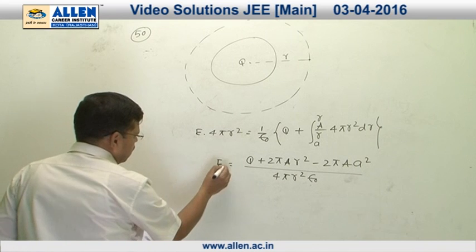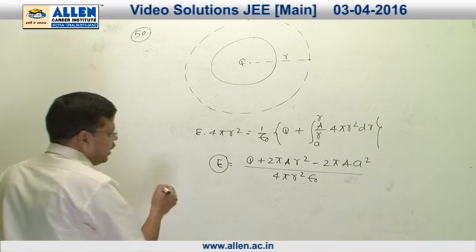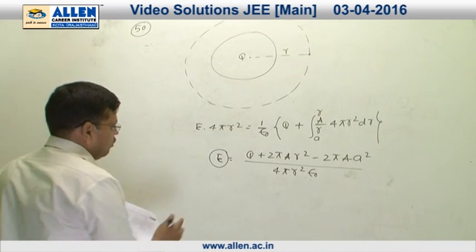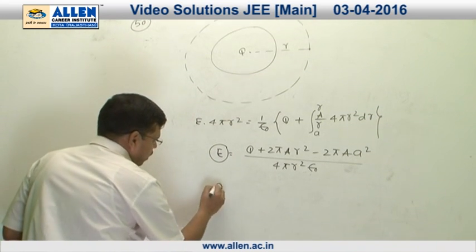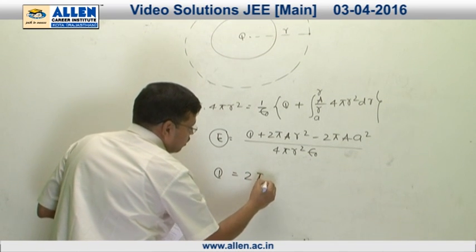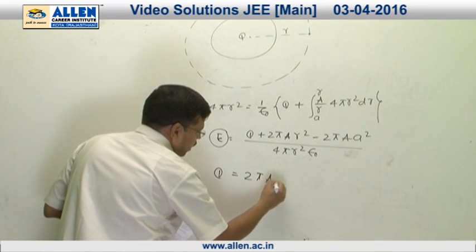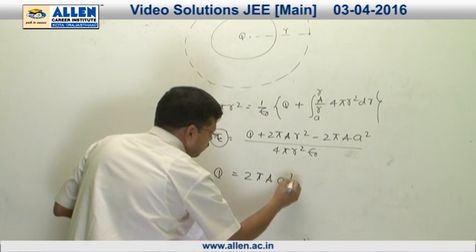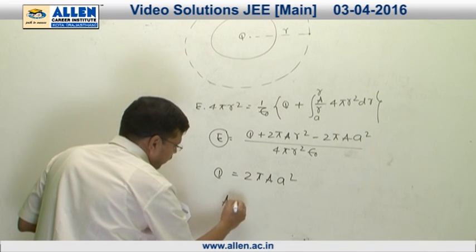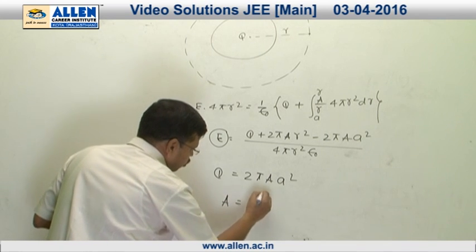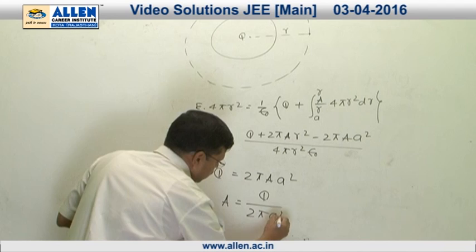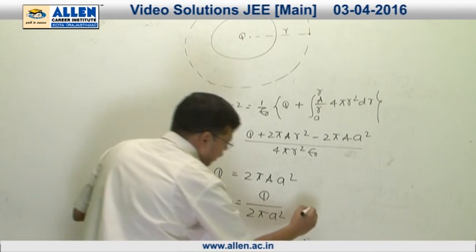Evaluating the integral, E = [Q + 2πAR² - 2πAa²] / (4πR²ε₀). For E to be independent of R, the R² terms must cancel, requiring Q = 2πA·a². Therefore capital A = Q / (2πa²). So the correct option is 2.